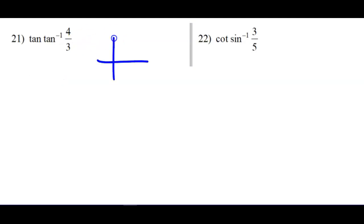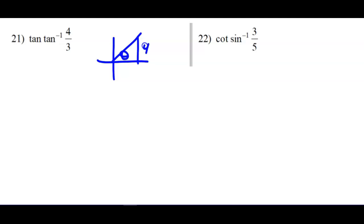One more — this one I think is just going to undo, because it's tangent and inverse tangent. But this is asking about the angle in here, who has opposite over adjacent. But then it says, once you find that angle, what is its tangent? It's just 4 thirds.